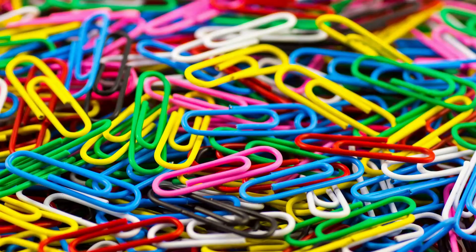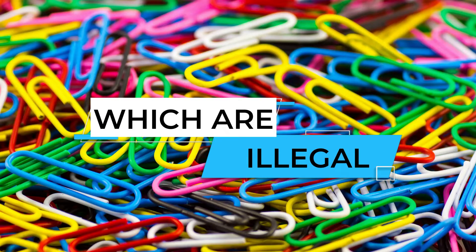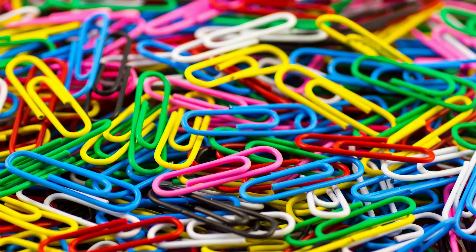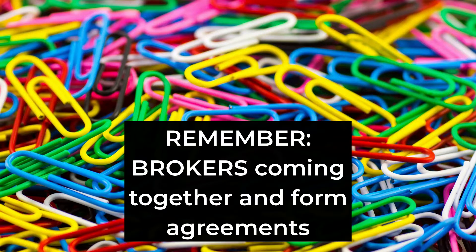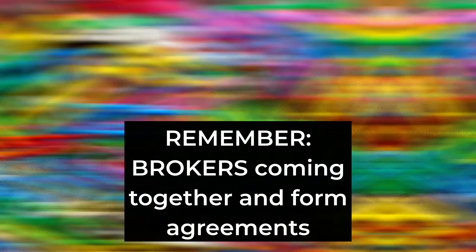When addressing these four violations, keep in mind we're referencing two or more brokers — different brokers coming together and forming agreements which are illegal. A broker can set up rules for their own company, and you as a licensee can set your own rules for how you conduct business. The key point is that this involves more than one broker — company green, yellow, blue, pink — coming together and forming these illegal agreements.